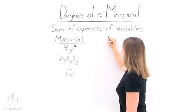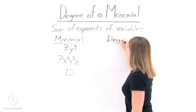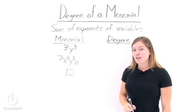Now to find the degrees of each one of these monomials, we need to pick out the variables and then just add the exponents together.